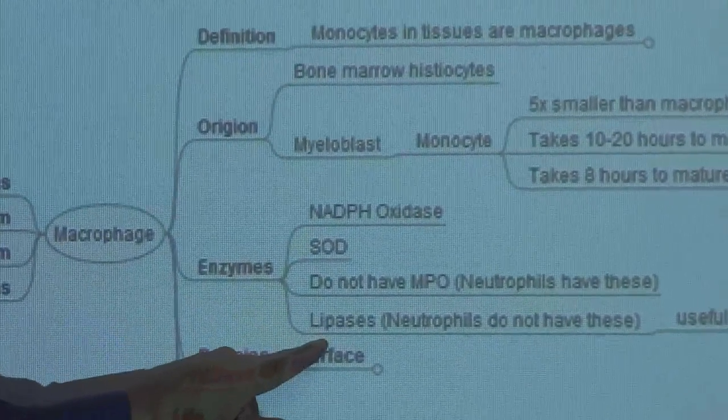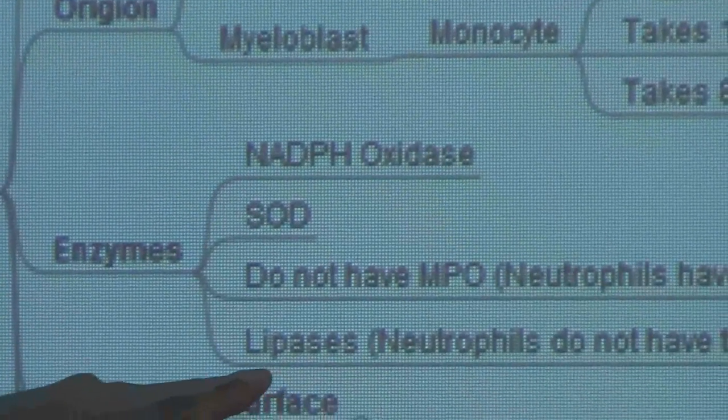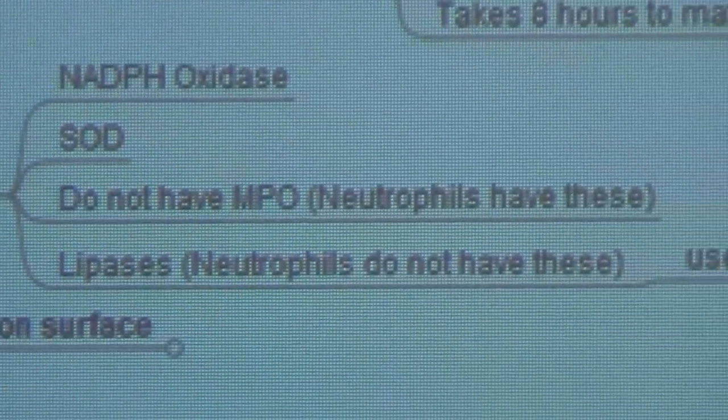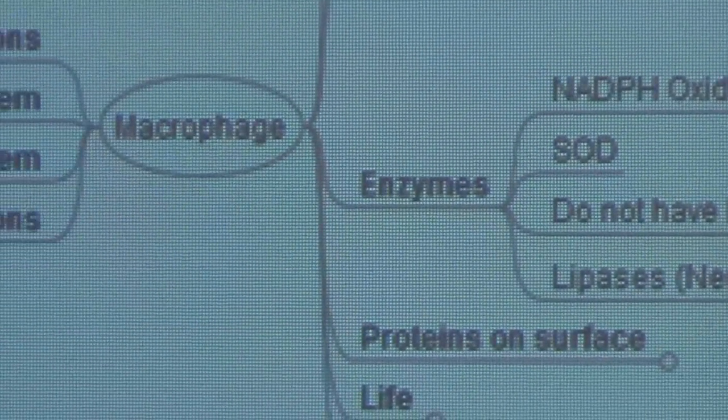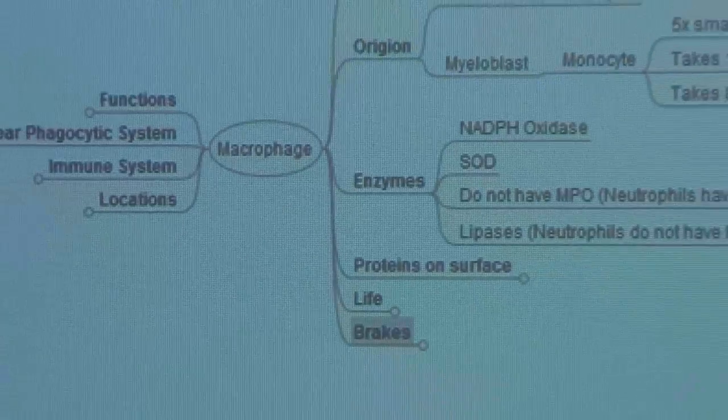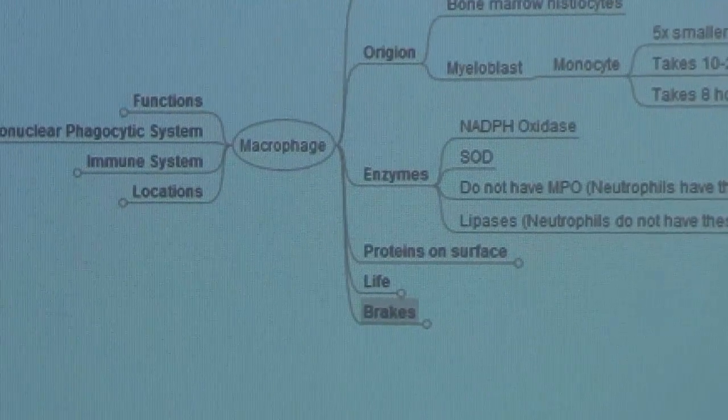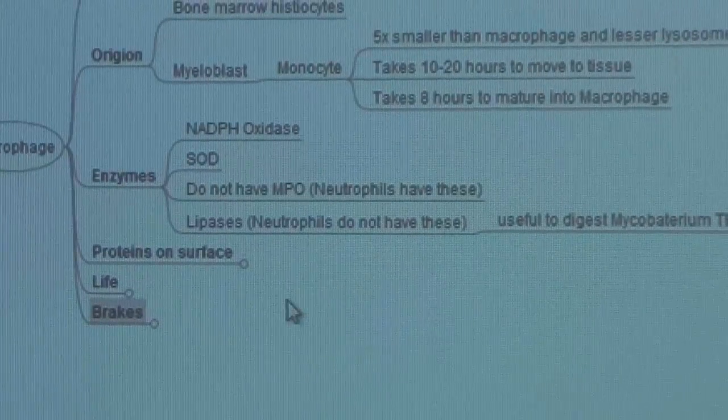Macrophages have lipases which they use to kill mycobacterium tuberculosis, but neutrophils do not have them. These are the enzymes. Then very quickly, the proteins on the surface of a macrophage.